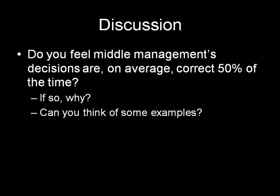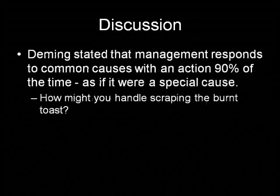In light of what we just learned about special and common cause, do you feel middle management's decisions are, on average, correct about 50% of the time? If so, why? Can you give us some examples? Deming once said that management responded to common causes as if they were special causes about 90% of the time. Can you think of some examples in your workplace where this has happened? How might you have handled scraping the burnt toast?